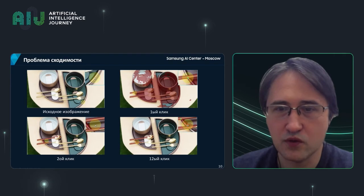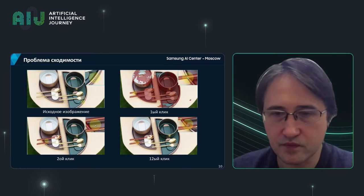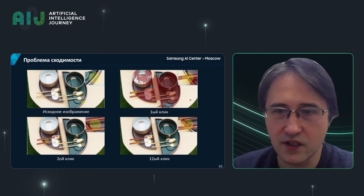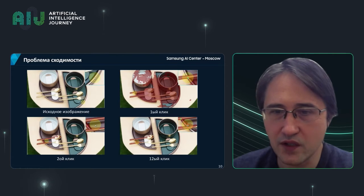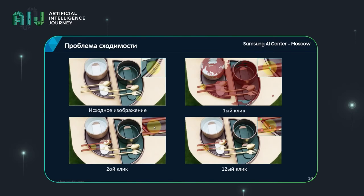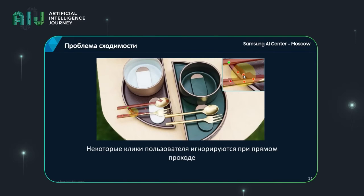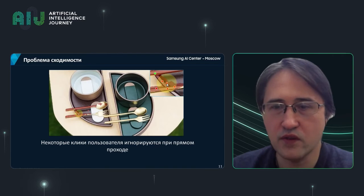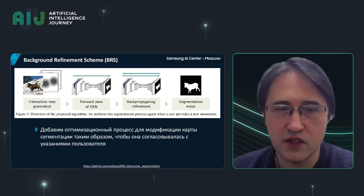For example, we tried to select a spoon by making a positive click to highlight it. Since the spoon is very bright and difficult to isolate, we made negative clicks trying to focus the algorithm on the spoon. But the model simply neglected all the user instructions. Most of the negative clicks were ignored — those areas were still considered part of the object even though the user had explicitly said they do not belong to it.